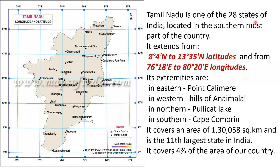Tamil Nadu is one of the 28 states of India located in the southernmost part of the country. It extends from 8 degrees 4 minutes north to 13 degrees 35 minutes north latitude, and from 76 degrees 18 minutes east to 80 degrees 20 minutes east longitudes.